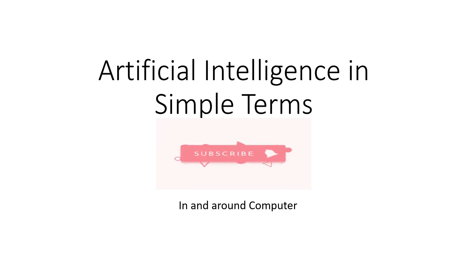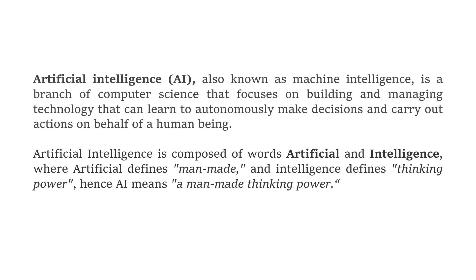In this video, I am going to explain artificial intelligence in simple terms. Artificial intelligence is also known as machine intelligence, and it's a branch of computer science that focuses on building and managing technology that can learn to autonomously make decisions and carry out actions on behalf of a human being.